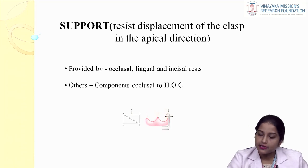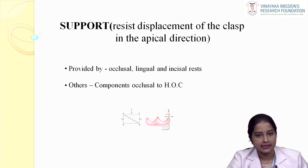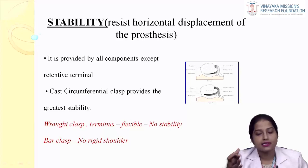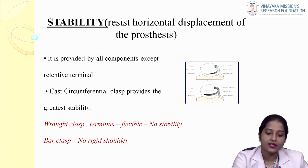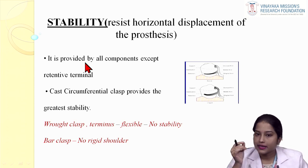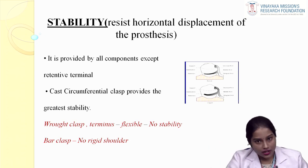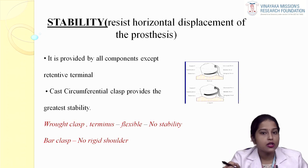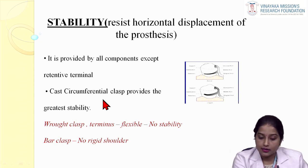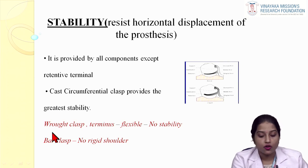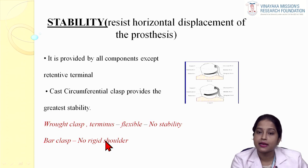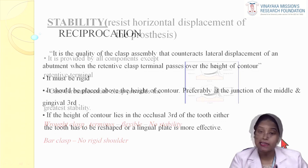Support is resistance towards tissue-ward movement, mainly provided by the rest — occlusal rest, cingulum rest, or incisal rest. Any components placed occlusal to the height of contour also provide support. Stability is resistance to horizontal movement of the prosthesis and is provided by all components except the retentive terminal. Since the retentive terminal engages the undercut and must be flexible, it does not provide stability. A cast circumferential clasp provides the greatest stability, whereas a bar clasp provides minimal stability due to its flexible approach arm.